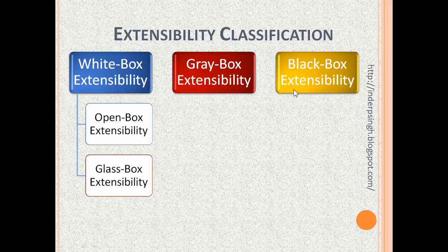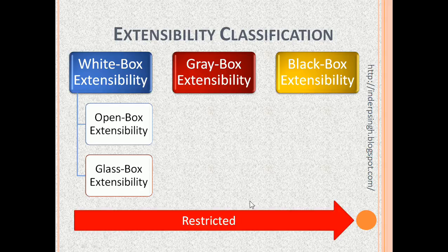The next class is black box extensibility. This allows the extension of the software system without having any knowledge of the internal details of the software system. White box extensibility is the least restricted type of extensibility, and black box extensibility is the most restricted type of extensibility.